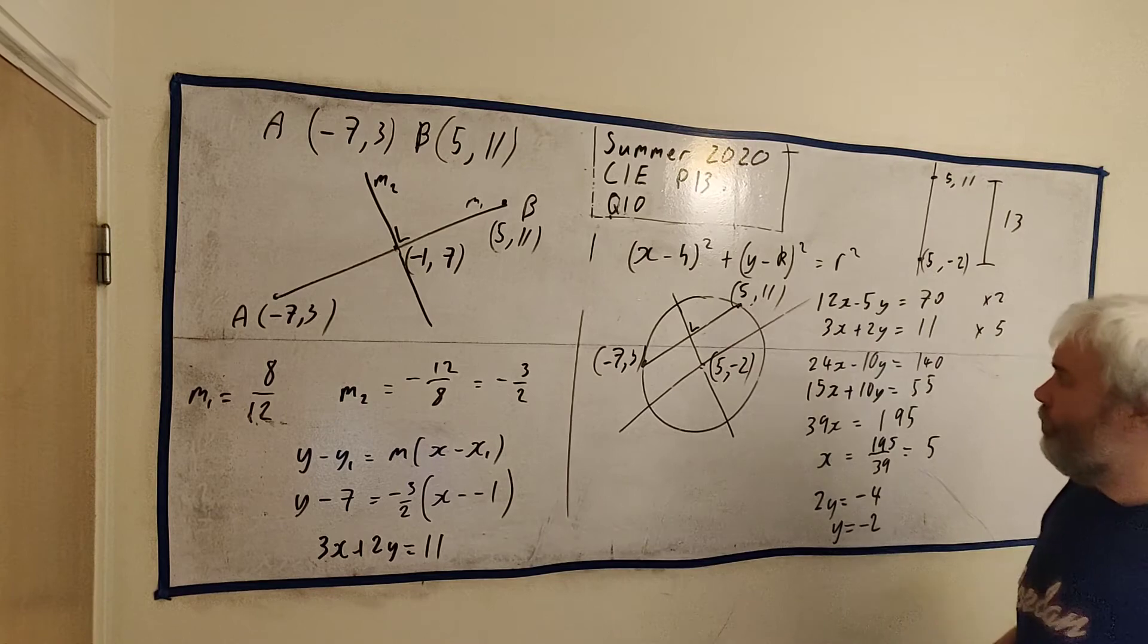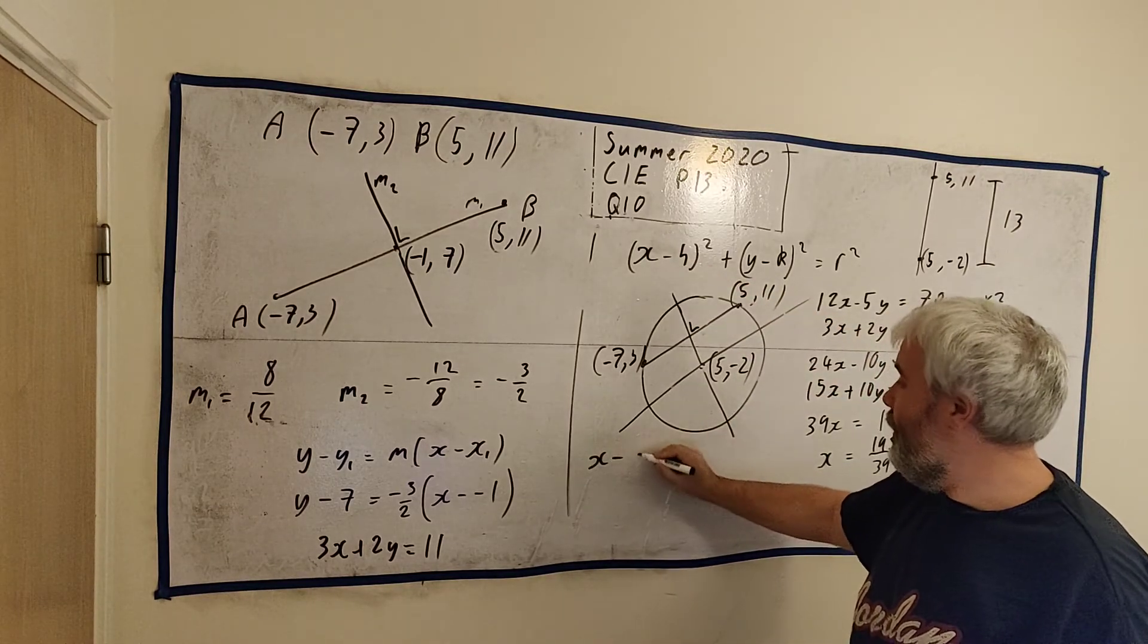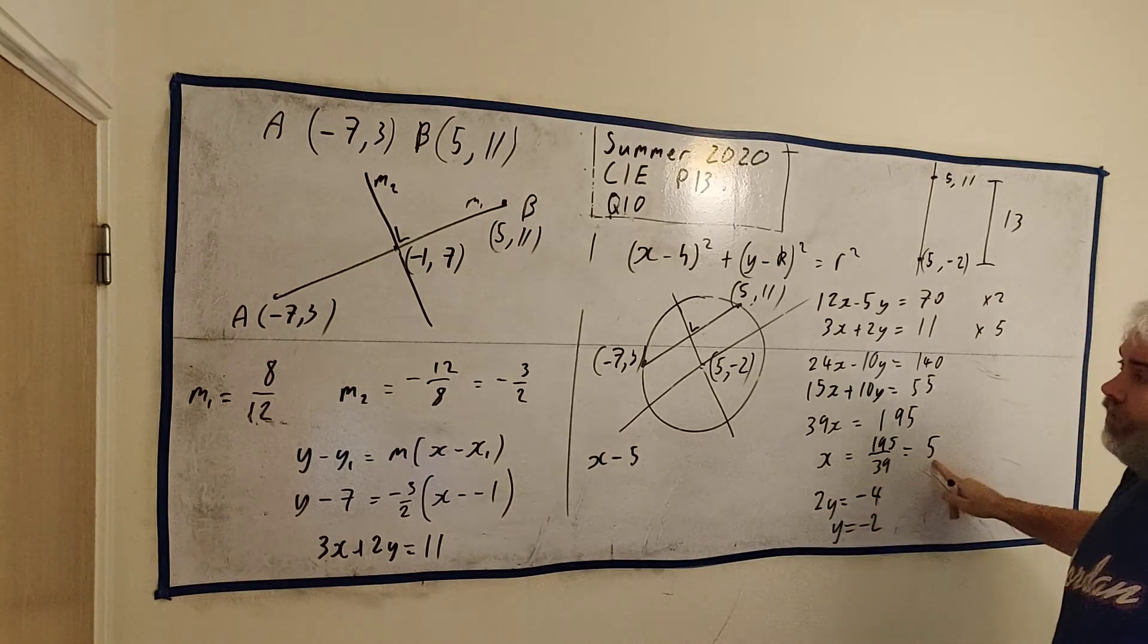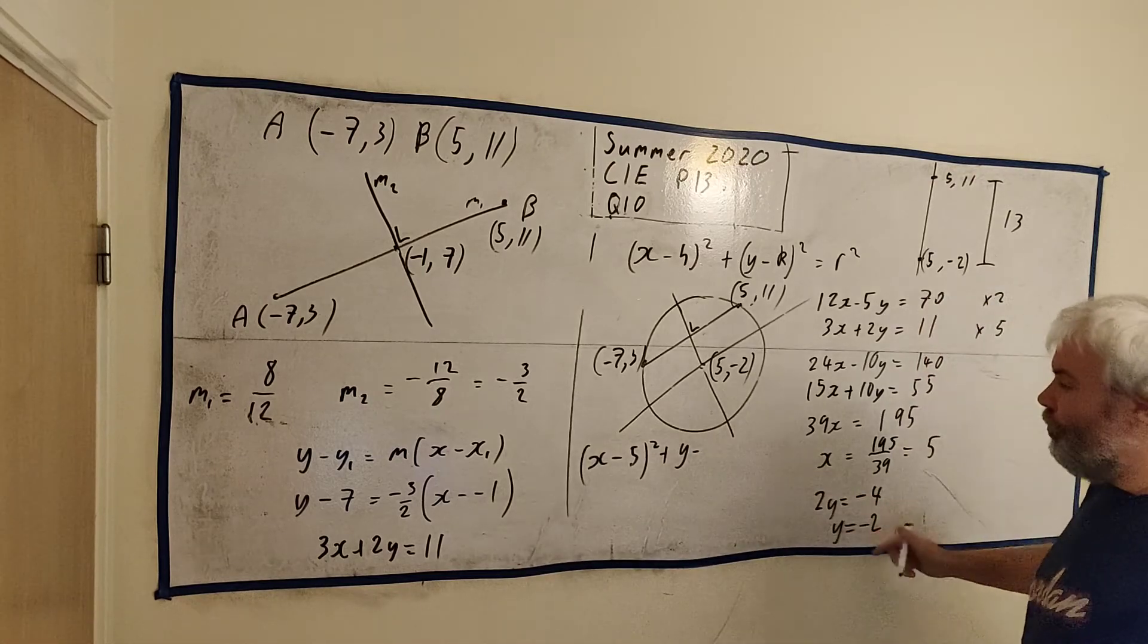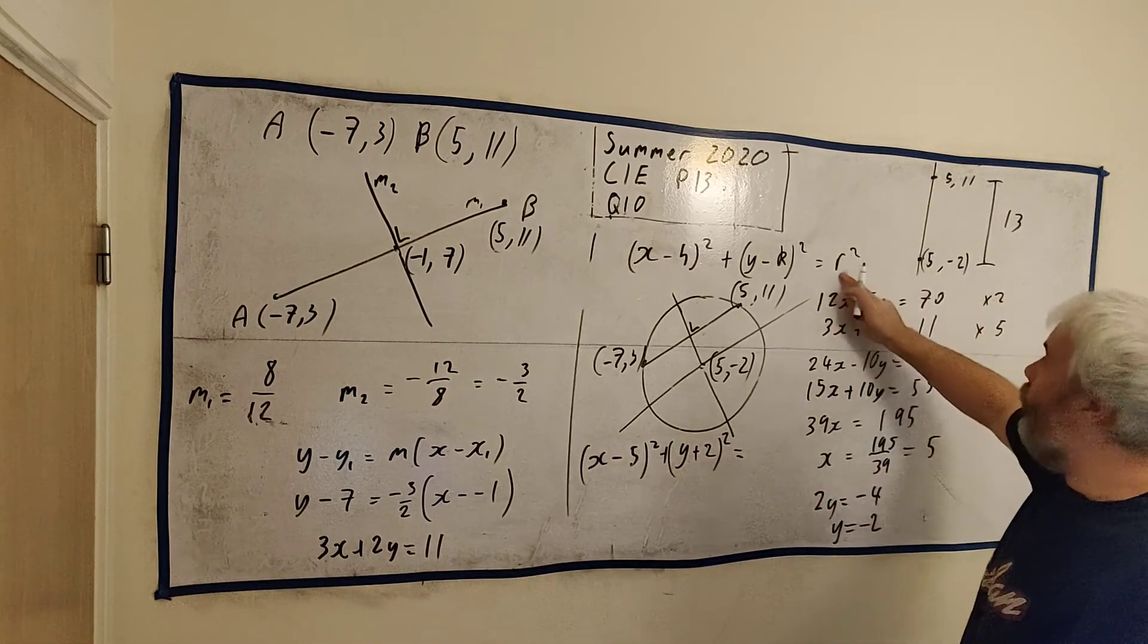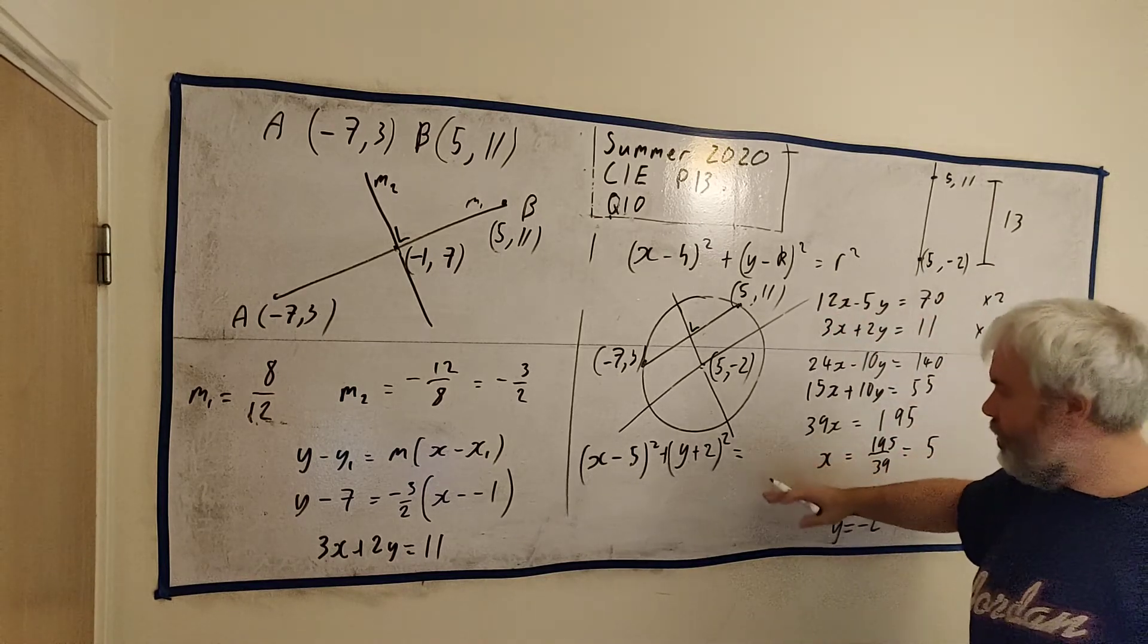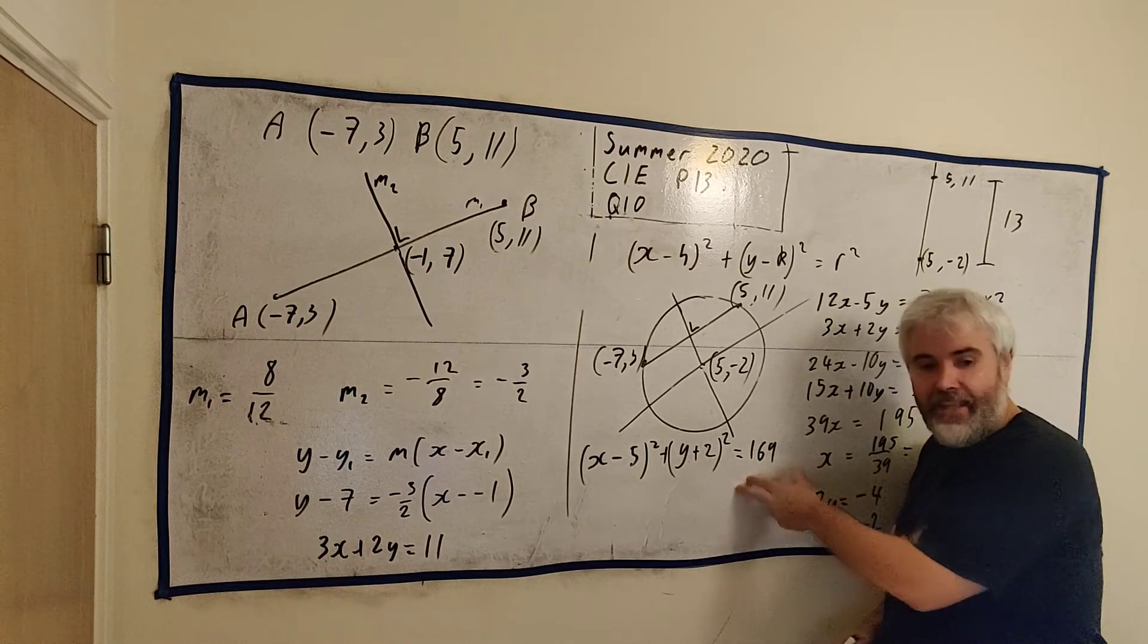We have an equation here. x minus 5, the center, squared plus y minus minus 2, minus minus is plus, squared equals r squared, 13, 13, 169. And that's it. That's the answer to that question. Really good, tricky question.